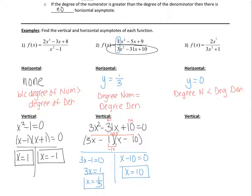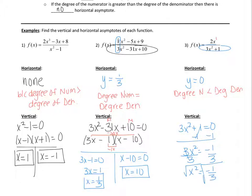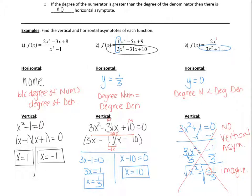For the last example, we set the denominator equal to zero: 3x squared plus 1 equals zero. There's nothing to factor, so we try solving algebraically. Subtract 1 from both sides to get 3x squared equals negative 1, then divide by 3: x squared equals negative one-third. Taking the square root gives imaginary solutions. Since we can't have imaginary x-values as asymptote equations, there are no vertical asymptotes. Any time you get imaginary solutions, the answer is no vertical asymptotes.